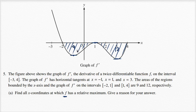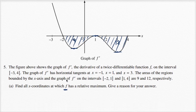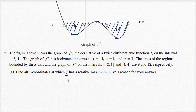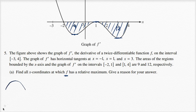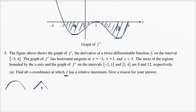We don't have a graph of f in front of us, so let's think about what needs to be true for f to have a relative maximum at a point. We're probably familiar with what relative maxima look like — they look like a little lump. Since this is a differentiable function over the interval, we're dealing with smooth relative maxima.